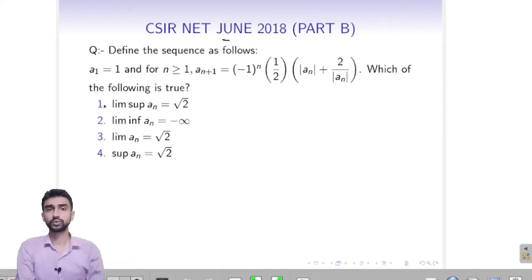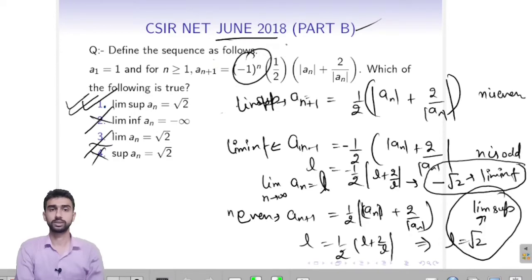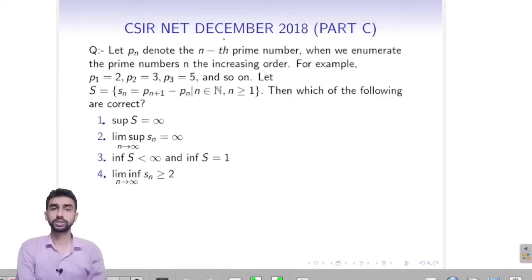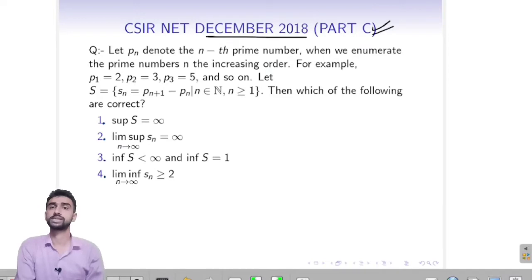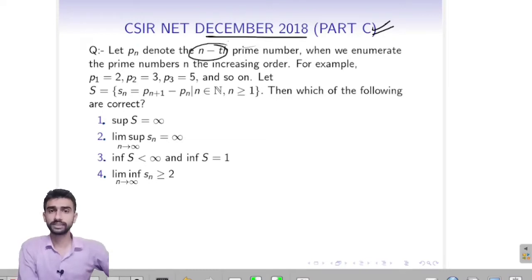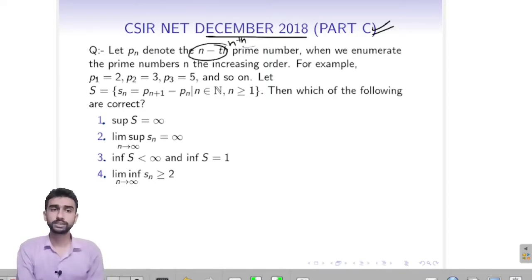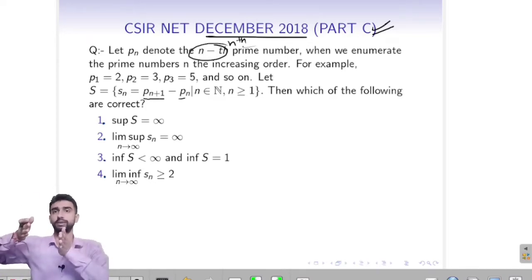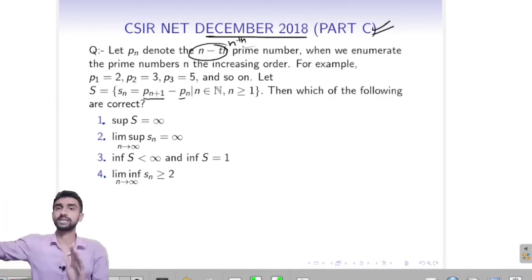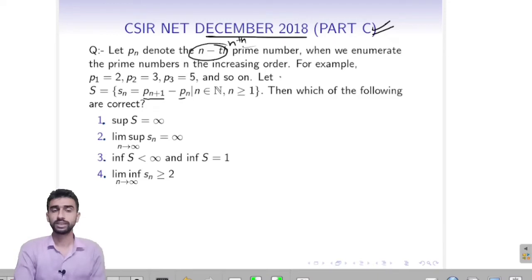There was another question in December 2018, a Part C question. It says: let Pn denote the nth prime, enumerating prime numbers in increasing order. For example, the first prime is 2, second prime is 3, third prime is 5, and so on. It defines a set S where we include Sn where Pn+1 minus Pn is the difference of successive primes. We find all such differences and determine which statements are true.